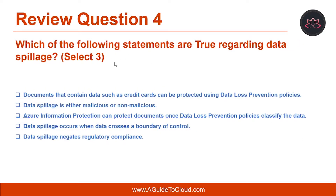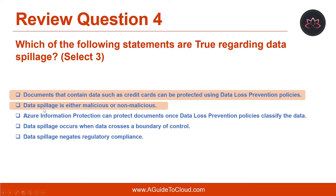Question number four: which of the following statements are true regarding data spillage? Select three. The correct answers are: documents that contain data such as credit card numbers can be protected using data loss prevention policies; data spillage is either malicious or non-malicious; and data spillage occurs when data crosses a boundary of control.